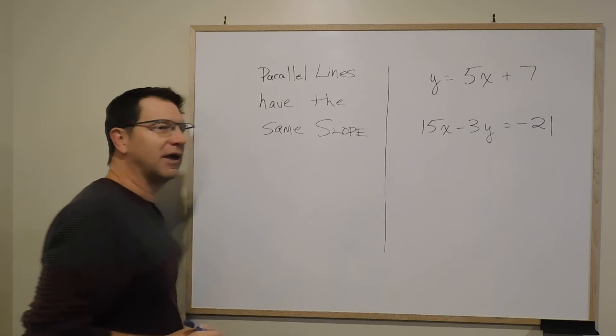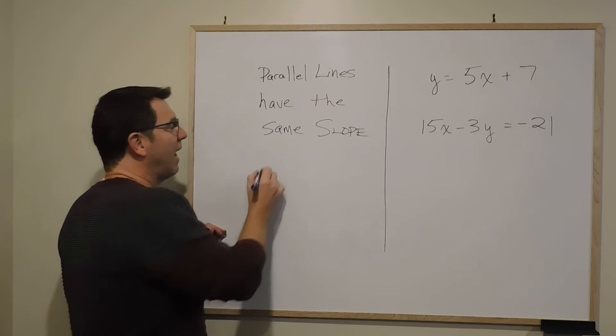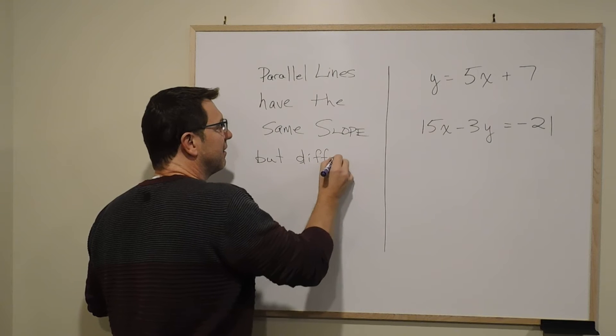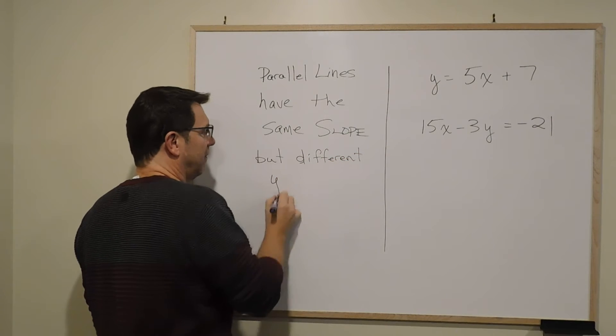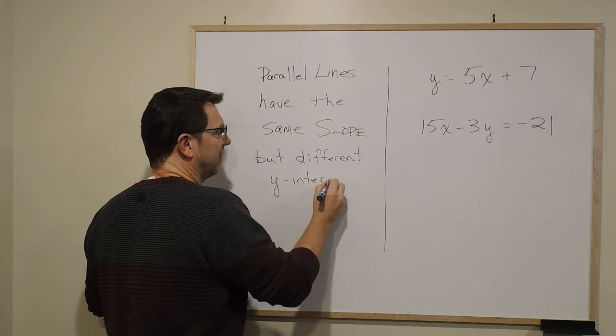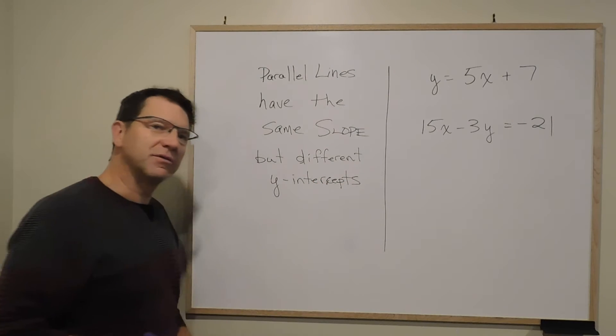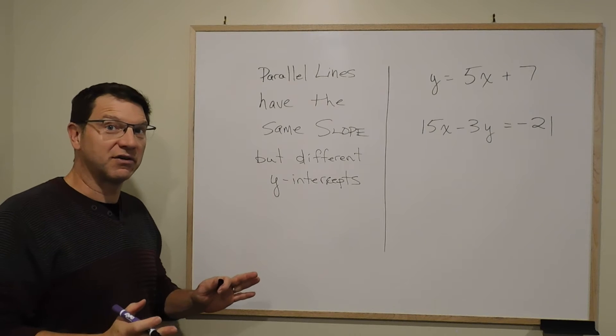They have the same slope but different y-intercepts. So that makes them parallel, like train tracks that will never cross.